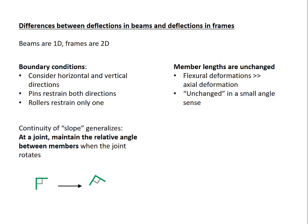The last difference between beams and frames is that now we need to make sure that we draw the deformed shape with the member lengths unchanged. The reason for this is that the flexural deformations in a frame are much, much larger than the axial deformations. So for purposes of a hand sketch, the axial deformations are pretty much zero. When I say unchanged, I mean this in a small angle sense.